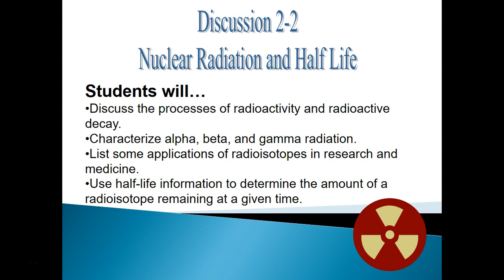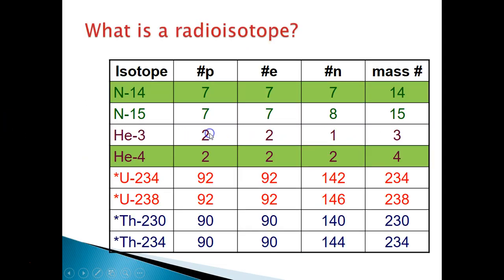Discussion 2-2: nuclear radiation and half-life. In this discussion, we're going to talk about what radioactivity is and the process of radioactive decay. We're going to characterize alpha, beta, and gamma radiation. We're going to talk about some uses for radioisotopes and use half-life information to determine the amount of a radioisotope remaining at a given time.